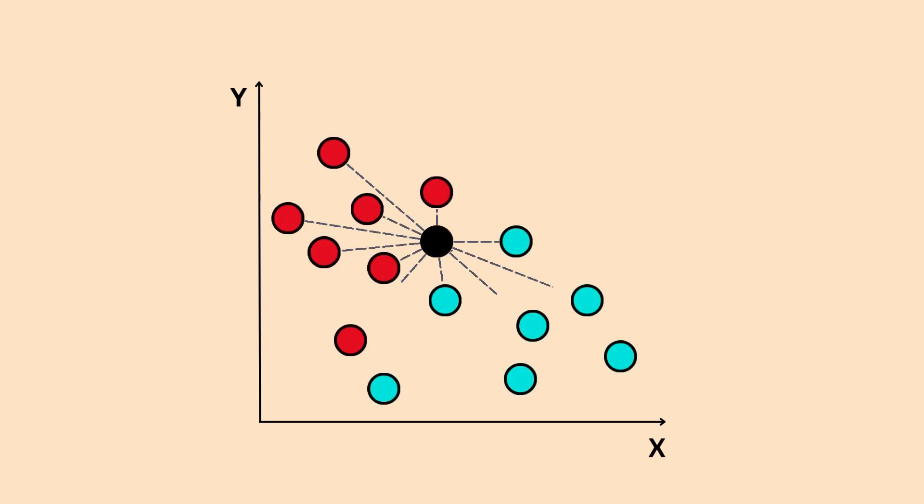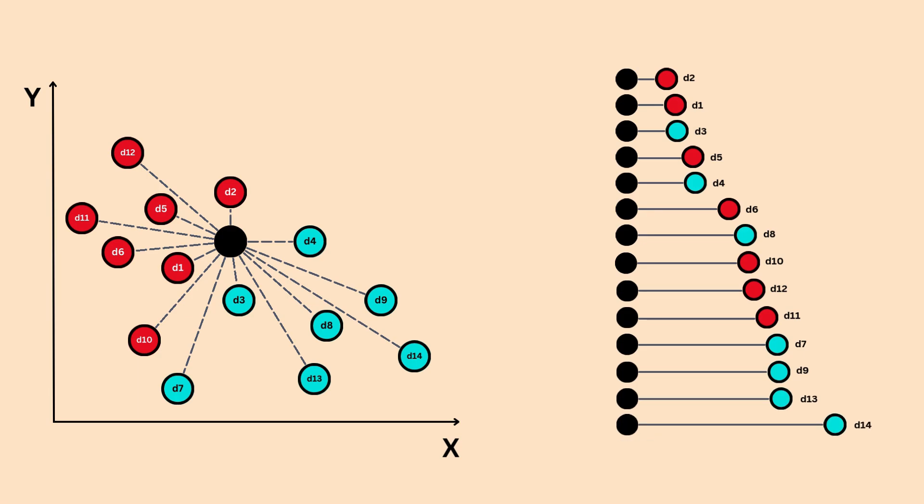The process starts by calculating the distance between the black dot and every point in our data set. Once we have all the distances, we sort them in increasing order. Next, we select the K-closest points, our nearest neighbors.